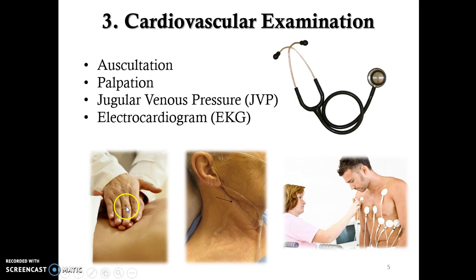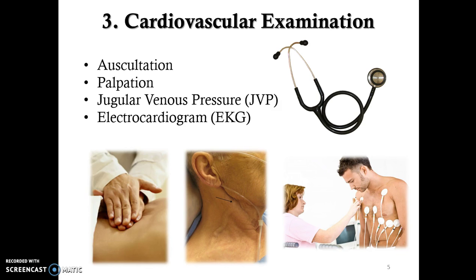Palpation is the next step, which means touching certain areas to feel the positioning of the heart or feel pulses that indicate blood flow in a specific region. Jugular venous pressure is a little more complex — you look at the jugular vein of a patient whose head is at a 45-degree angle, face turned away from you, and note where you see that pulse or pressure. You take a measurement straight across and then down to the chest, and that distance is the jugular venous pressure measurement.